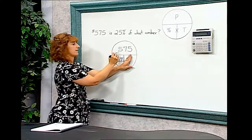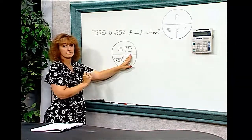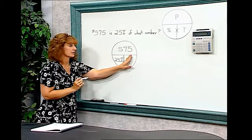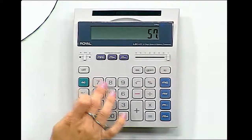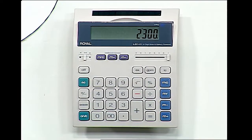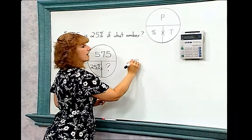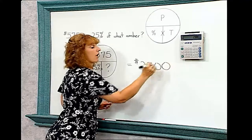575 divided by 25 percent. So let's go to our calculator. 575 divided by 25 percent gives us a cost of $2,300 for the car.